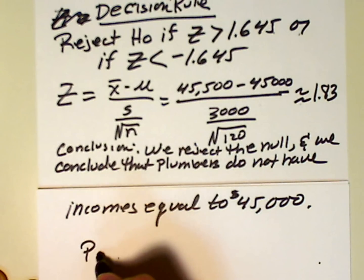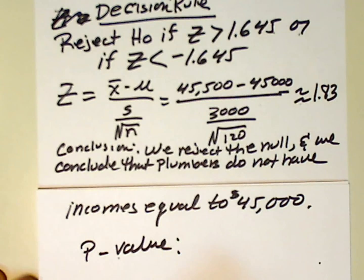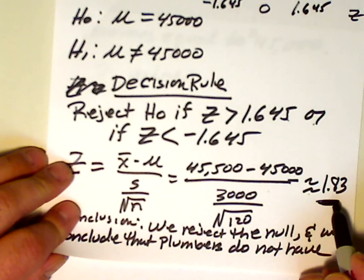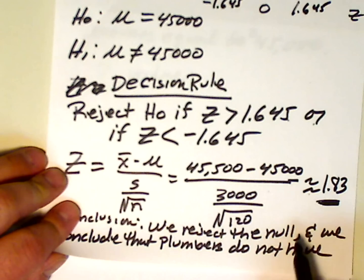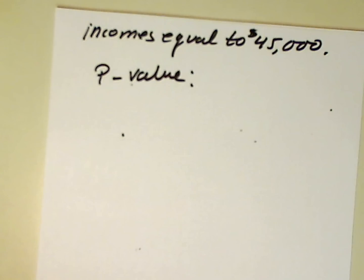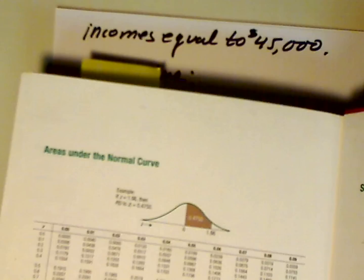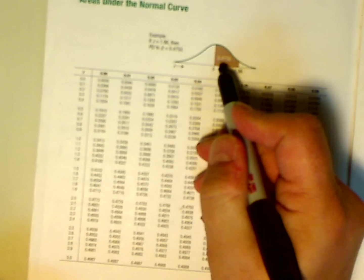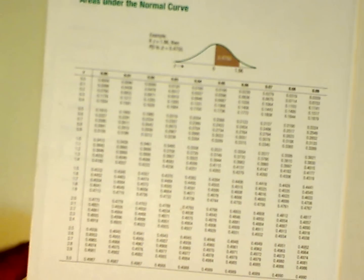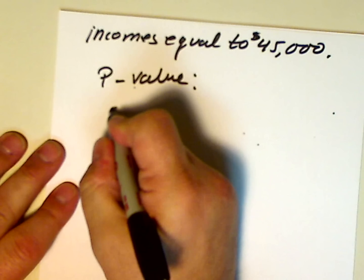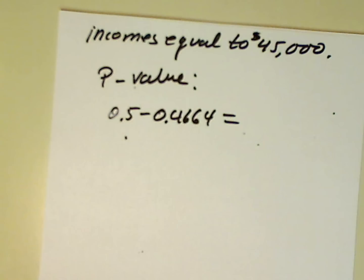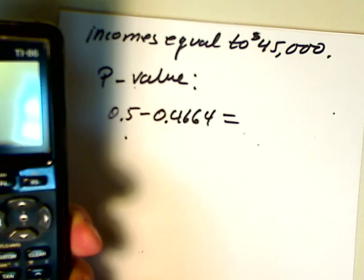Now we want to calculate the p-value. Well, to do that, the p-value is just the area in the tail associated with the z-value, the test statistic, the z-value associated with the test statistic. So, that's 1.83. So, there's going to be two different ways we can do that. We can do this. 1.83, that's 0.4664. And that's the central region area. But we want the tail. So, we take 0.5 minus 0.4664. And I believe, let's see what that's going to give us. That's 0.5 minus 0.4664.